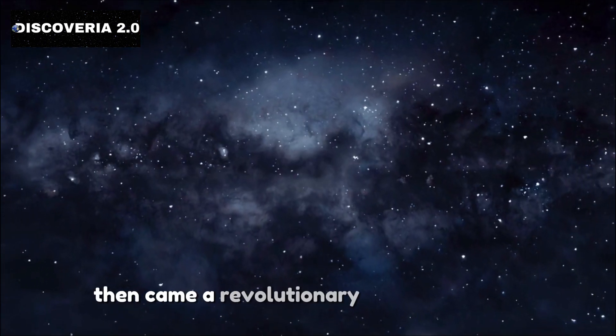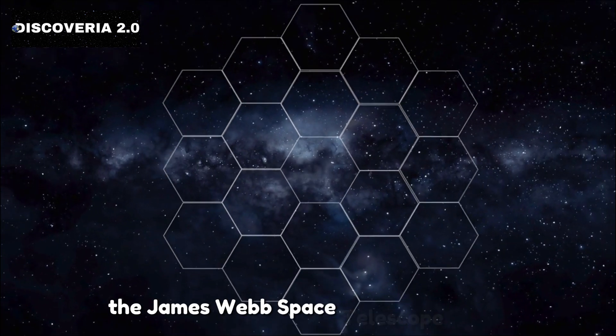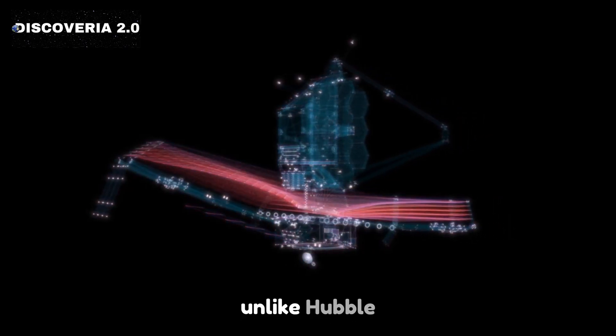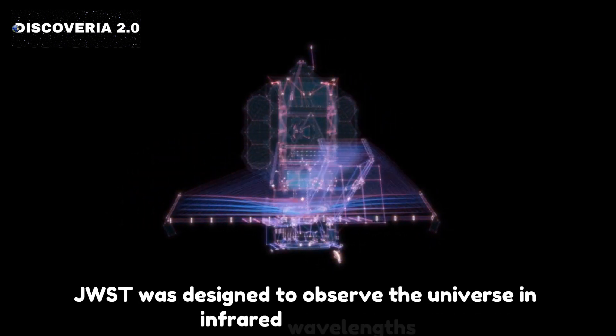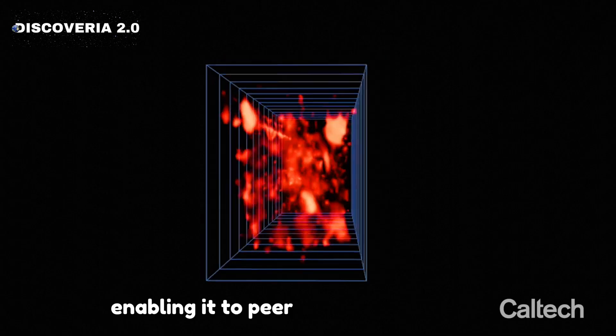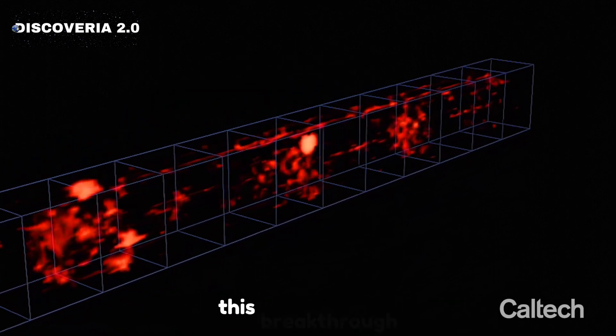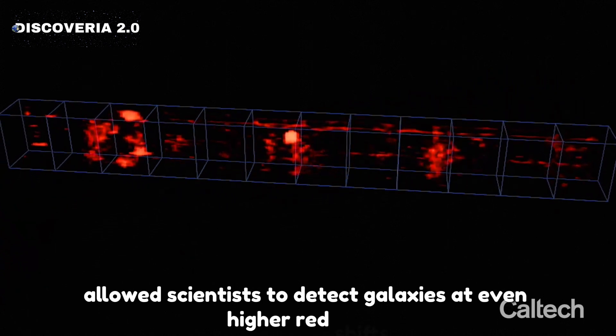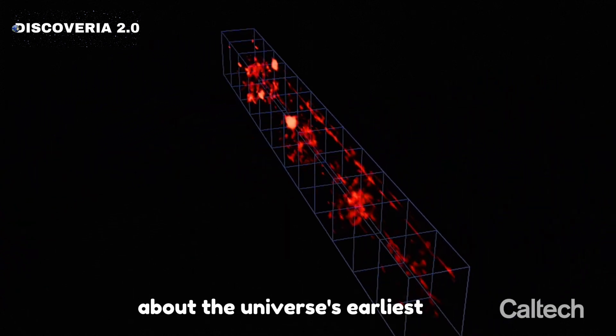Then came a revolutionary leap forward in cosmic exploration, the James Webb Space Telescope, JWST. Unlike Hubble, JWST was designed to observe the universe in infrared wavelengths, enabling it to peer into regions of space that had previously been hidden. This breakthrough allowed scientists to detect galaxies at even higher redshifts, pushing the boundaries of our knowledge about the universe's earliest epochs.